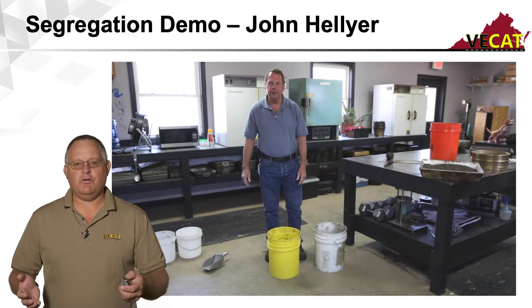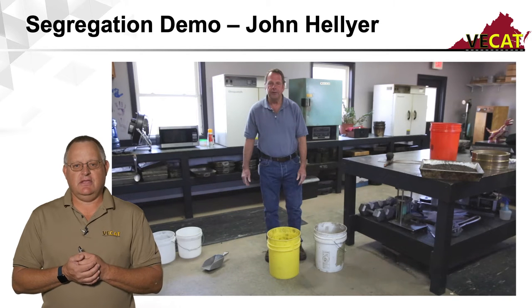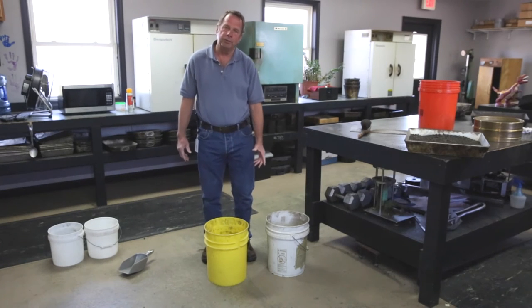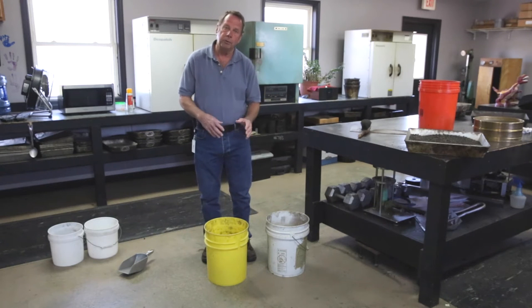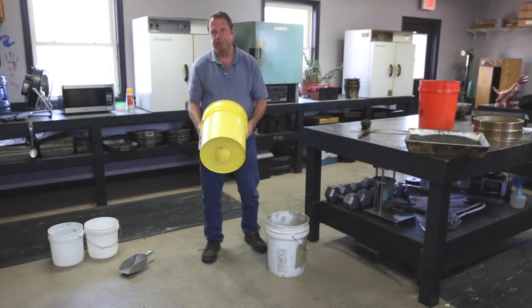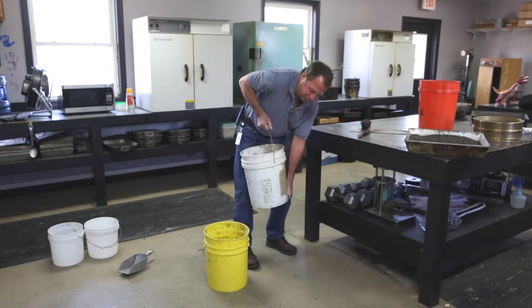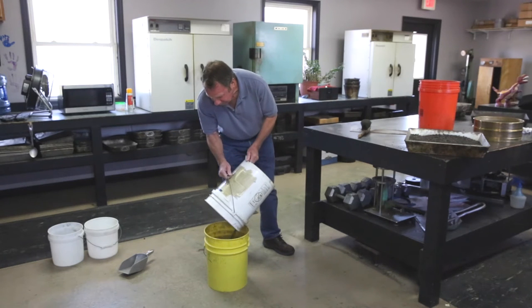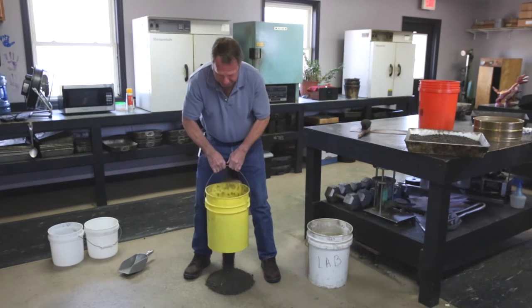You may ask why it's so important. John Hellyer with Luck Stone put together a great video showing what happens with RAP if we don't handle it properly and how it can actually impact the results. John demonstrates segregation with RAP out of a stockpile, showing that the gradation and binder content can vary depending on how you work the stockpile. He uses a five-gallon bucket with a hole cut in the bottom to build a small stockpile representing RAP that has gone through the process.